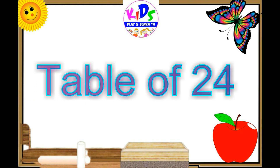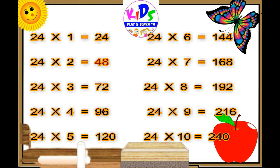Let's repeat. 24 ones are 24, 24 twos are 48, 24 threes are 72, 24 fours are 96, 24 fives are 120, 24 sixes are 144.